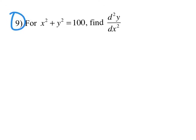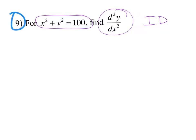On the next page, number 9, we're being asked to find the second derivative. Let's go ahead and find the first derivative, because in order to find the second derivative, we have to derive the first derivative. We are going to be deriving implicitly — implicit differentiation — because this is not solved for y. So let's find the first derivative.